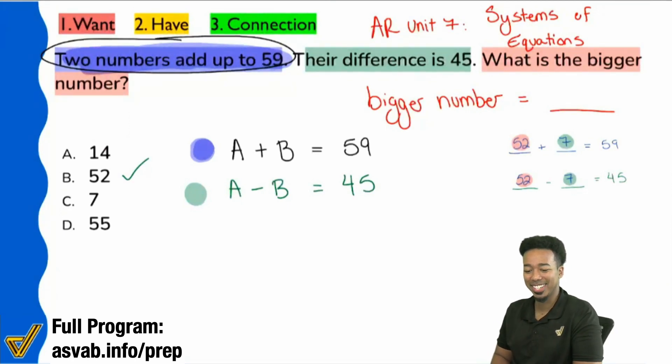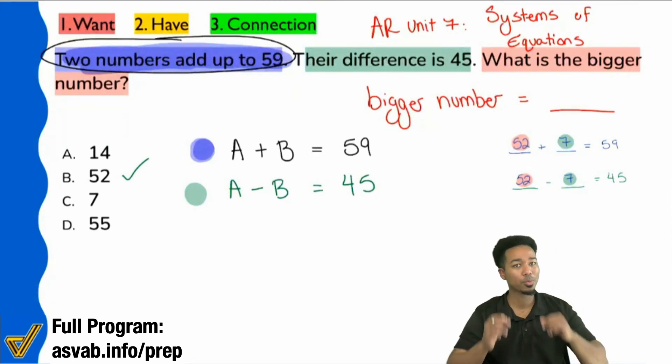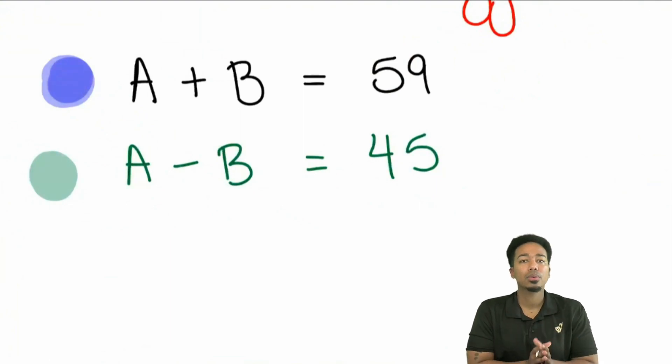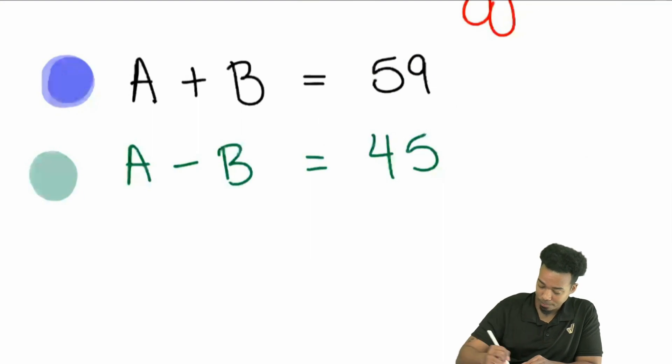So my question again is, is anybody confused on where to go after this? Oh, I love seeing more nos. I was expecting a lot of yeses. Okay. So for those of you that don't know, here's what we're going to do. Let me zoom in a little bit. What we're going to do is we're going to notice that, hey, look, we're looking for the bigger number. That's actually this right here. That's A.